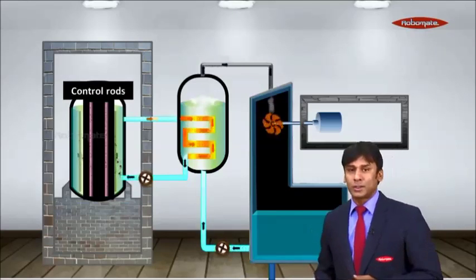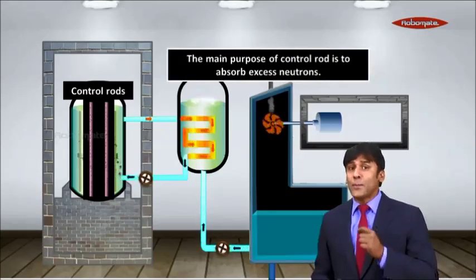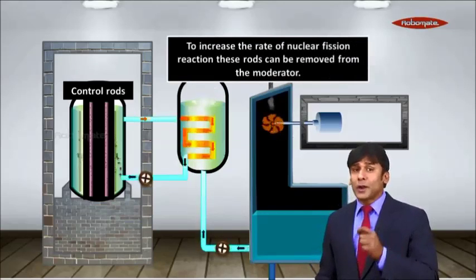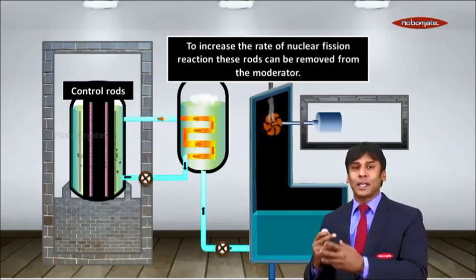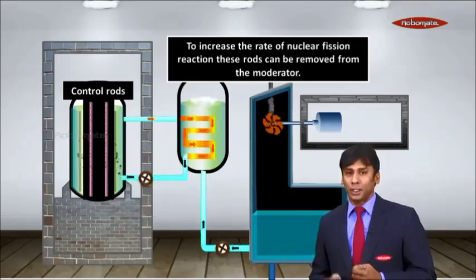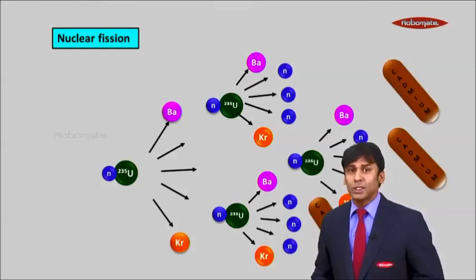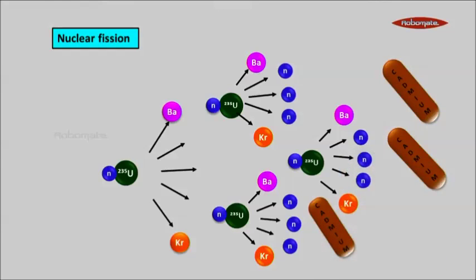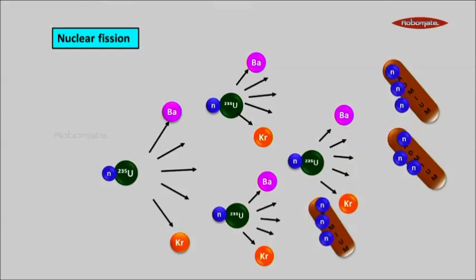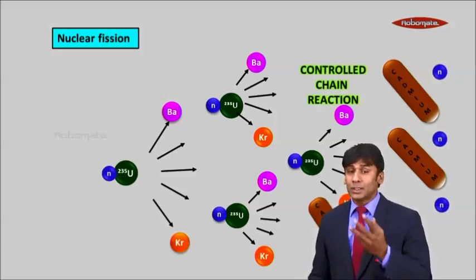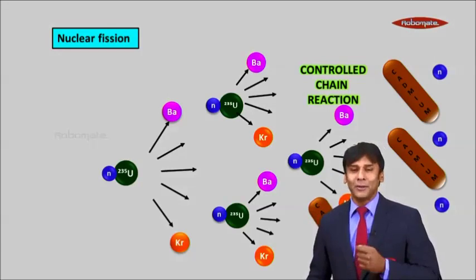These are the control rods. The main purpose of control rods is to absorb excess neutrons. To increase the rate of nuclear fission, these rods can be removed from the moderator. If you remove them, the fission reaction will expand faster. These neutrons are made incident on the control rods, which are made of cadmium. When they are incident on cadmium, excess neutrons are absorbed and only a limited number of neutrons are left to carry forward the fission process. When this is controlled, it is called a controlled chain reaction.